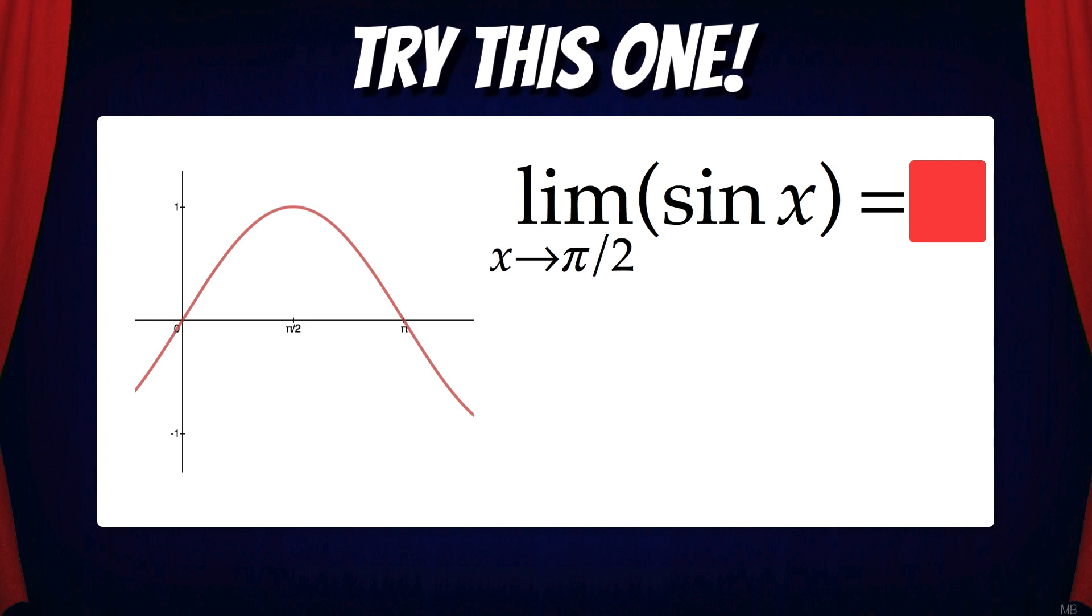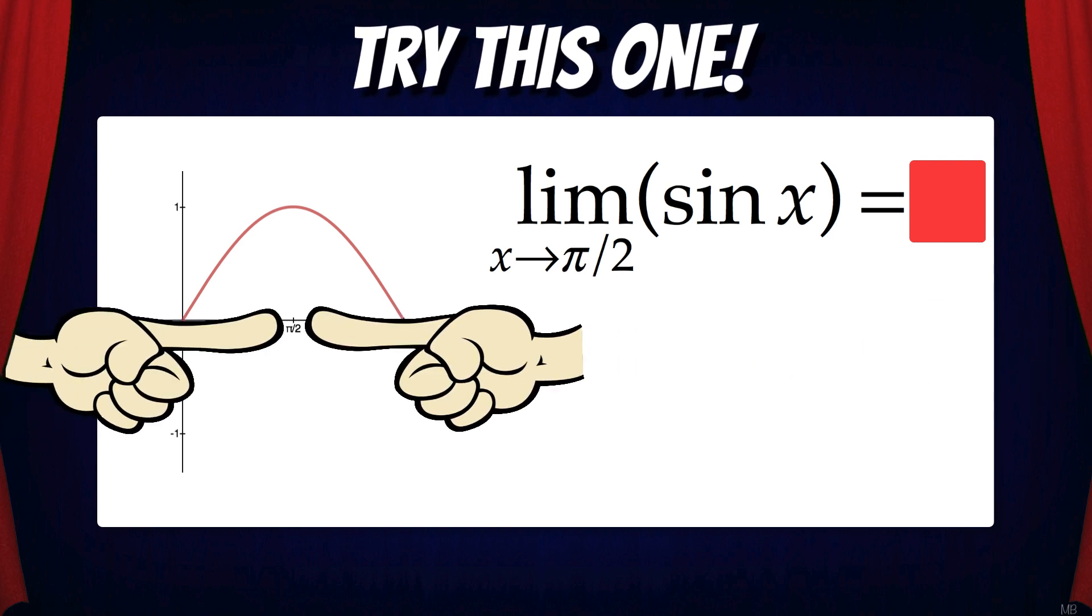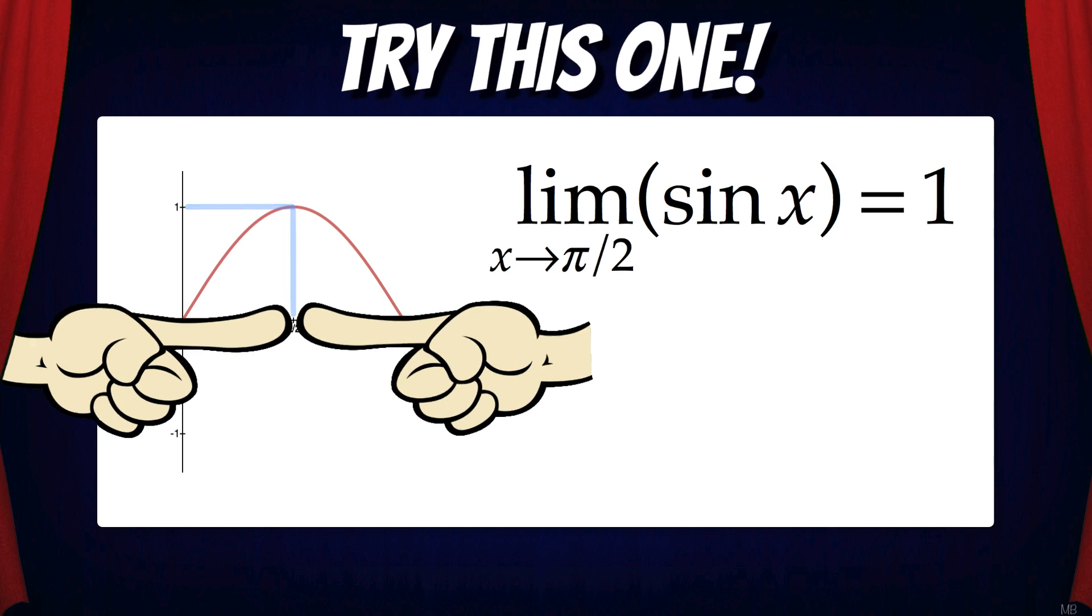How about this example? The limit of sin x as x approaches pi over 2. As x approaches pi over 2, our function is headed towards a height of 1. So we can say that the limit of sin x as x approaches pi over 2 equals 1.